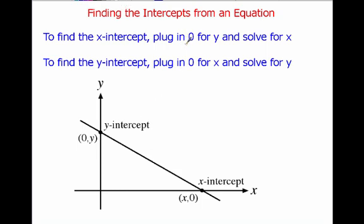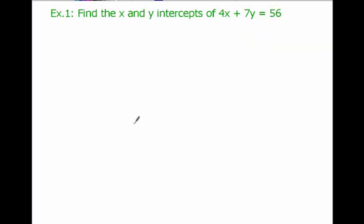So how do we figure out where these are? Well, to find the x-intercept, we're just going to plug zero in for y and solve for x. Similarly, to find the y-intercept, we're just going to plug zero in for x and solve for y. And whatever we get for the numbers, those are x and y-intercepts. So let's take a look at an example of that.